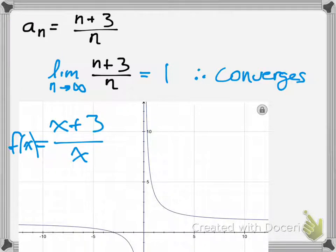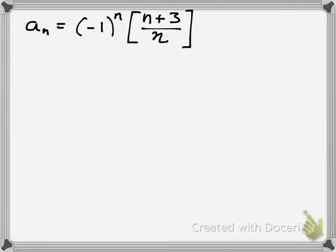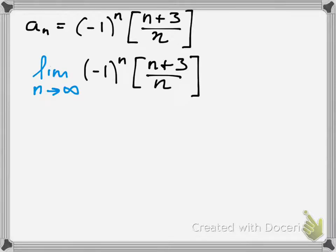So we're going to try another problem. Now we have this other function — it's pretty much the same, but notice how we have something out in front of it. That negative 1 to the nth power pretty much means that each term is going to alternate between a positive and a negative number. The first thing you always want to do to determine convergence or divergence is take the limit of the function — treat a_sub_n as a function.